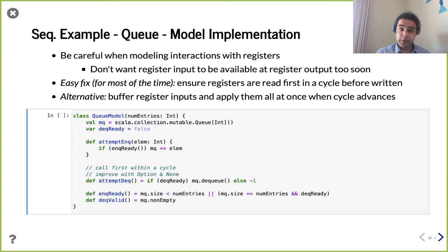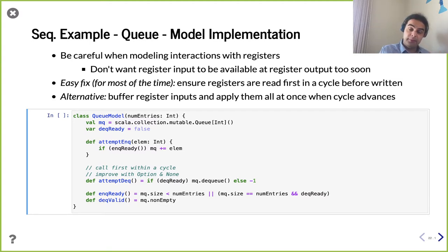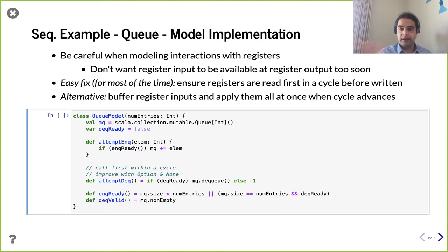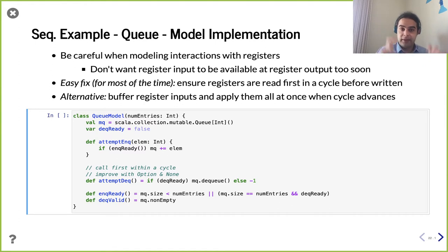With registers, imagine data coming in where you don't want it to come out immediately — it has to come out the next cycle. The easiest way to handle this in Scala is to read the register outputs before you produce any register inputs; that way you're reading the old value rather than the new one. For simple examples, we're able to read before we write and get the properly delayed value. If that's not possible, you can fall back to explicitly buffering register inputs and outputs, then copying inputs to outputs when you advance the clock cycle.